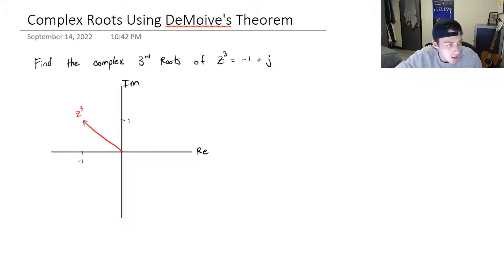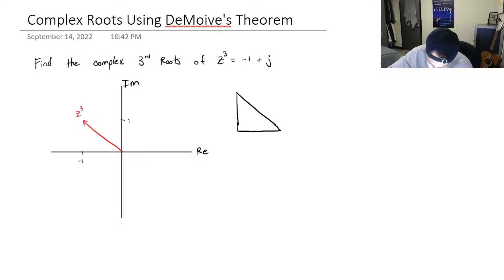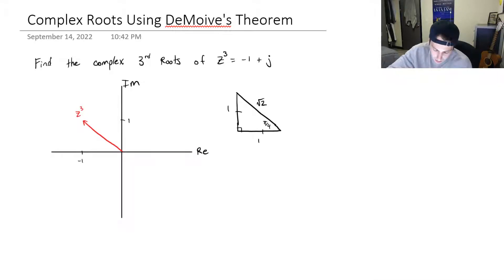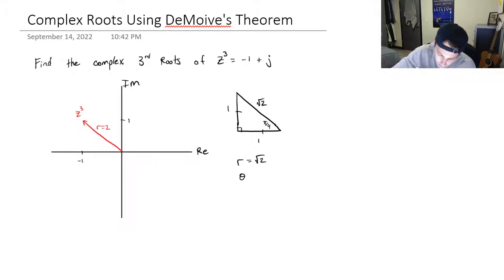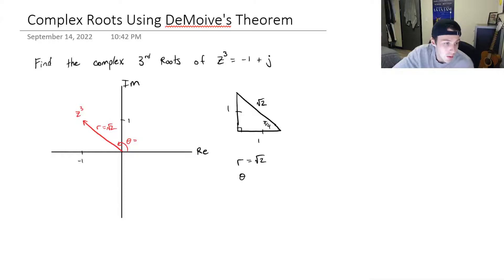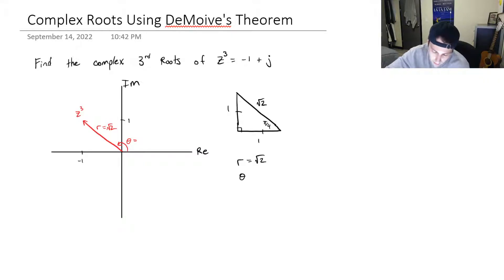That equal magnitude is an indicator that it's going to be the special triangle with angle π/4. Using this special triangle, where the sides are 1, 1, and √2, we can immediately see the modulus r = √2. For theta, we go from the positive real axis to the complex number, so θ = π − π/4, which is 3π/4.